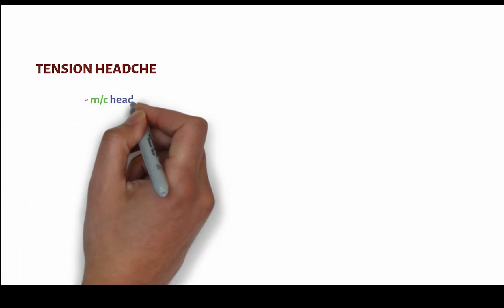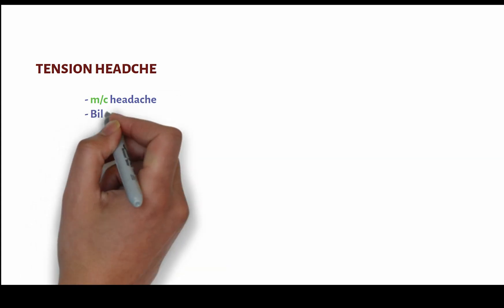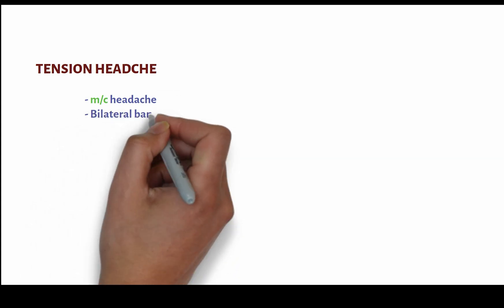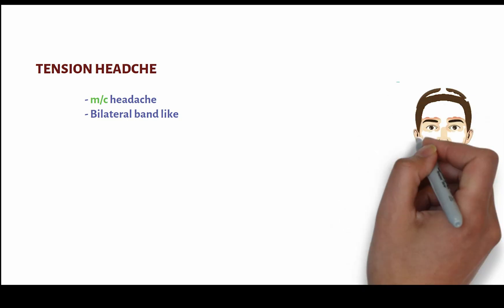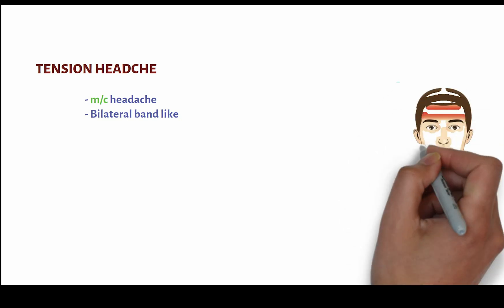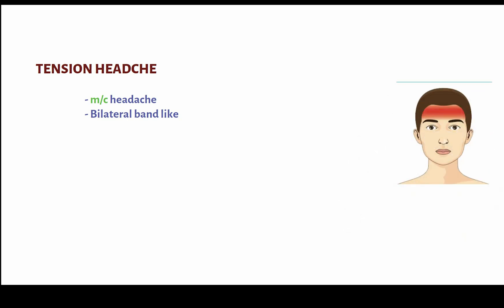Tension headache is the most common type of headache, bringing on a steady mild to moderate pain that feels like a band tightening around the head. It is bilateral. They often result from stress, muscle tension, or poor posture.